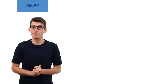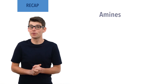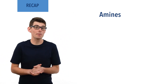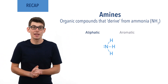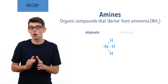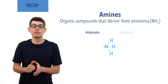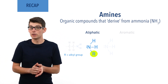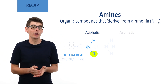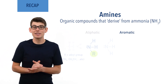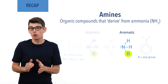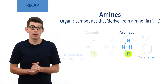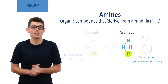Before we talk in detail about amides, there are a few essential ideas you need to be comfortable with. Amines are a group of organic compounds that derive from ammonia, NH3. Amines can be aliphatic or aromatic. In aliphatic amines, one or more of the hydrogen atoms in ammonia has been replaced with an alkyl group — a straight or branched carbon chain, such as methyl or ethyl. In aromatic amines, one of the hydrogen atoms in ammonia has been replaced with an aryl group, such as phenyl — effectively a benzene ring attached to something else.